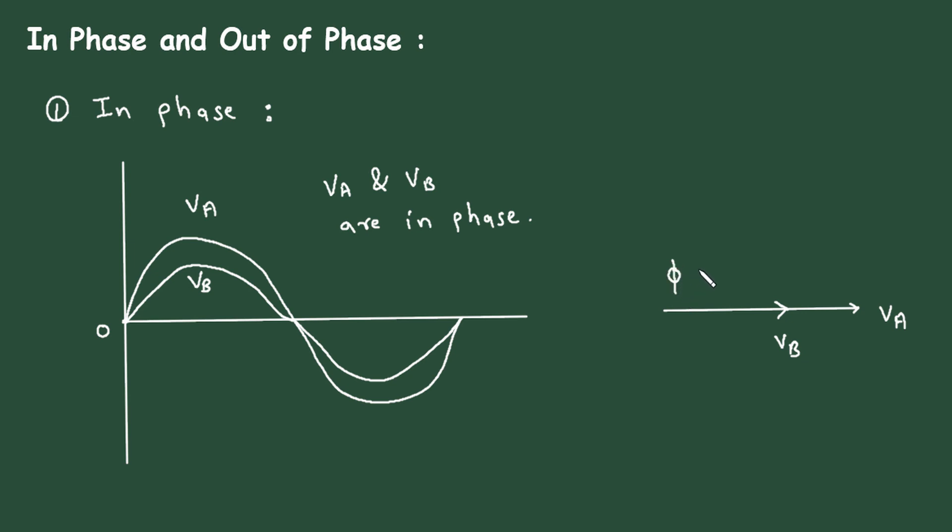And here we can write the phase angle phi is equal to zero degree or zero radian. Now this is called as phasor diagram, and this is called as in-phase, or we can write, since this is VA and this is VB, so we can say voltages in-phase.